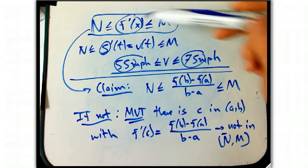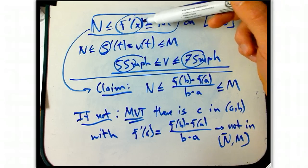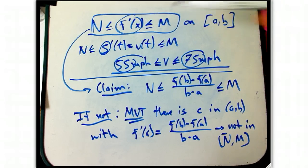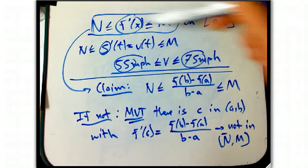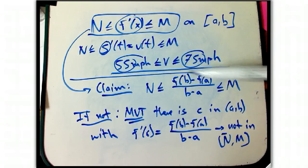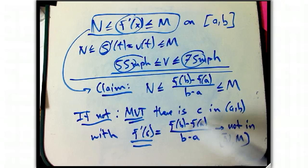If the MVT says you can always find a tangent slope, an instantaneous rate of change to match any given secant slope, then if you know something about where the tangent slopes could possibly be, the secant slopes have to be in that range also, or else you're going to be able to find a tangent slope that matches the secant slope that's not in the range.